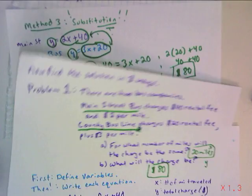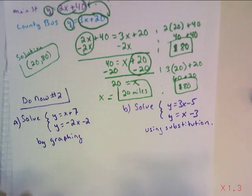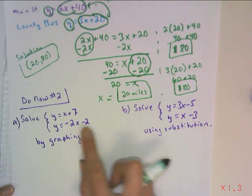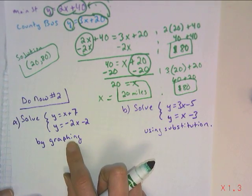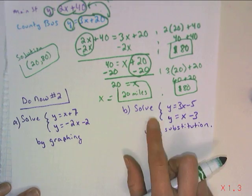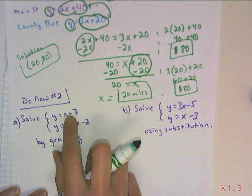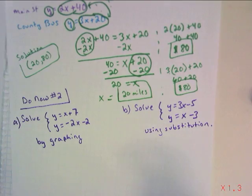So now, for do now number two, you have two systems here, A and B. The first one I want you to try to solve graphically, and the second one I want you to use substitution. So you need some graph paper for this one. This one you're solving with substitution. Pause it, and then we'll talk.